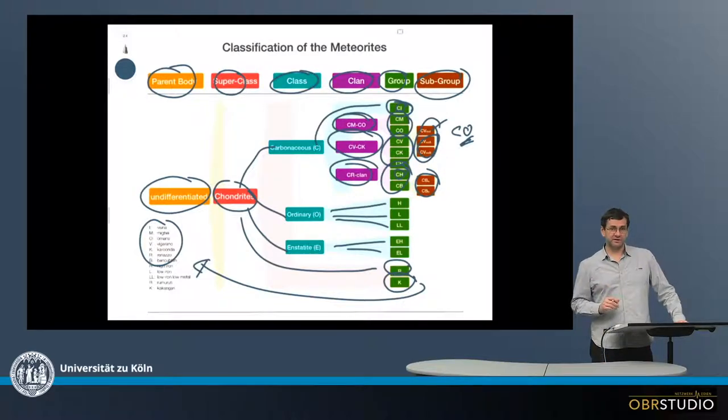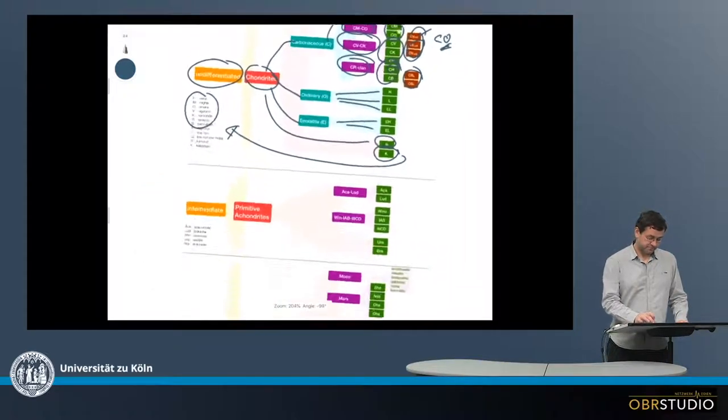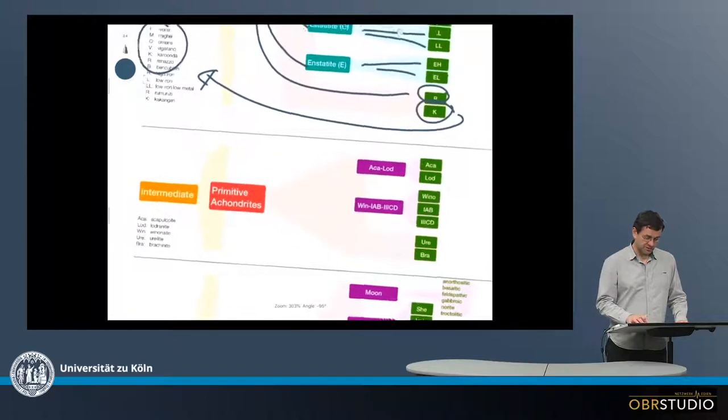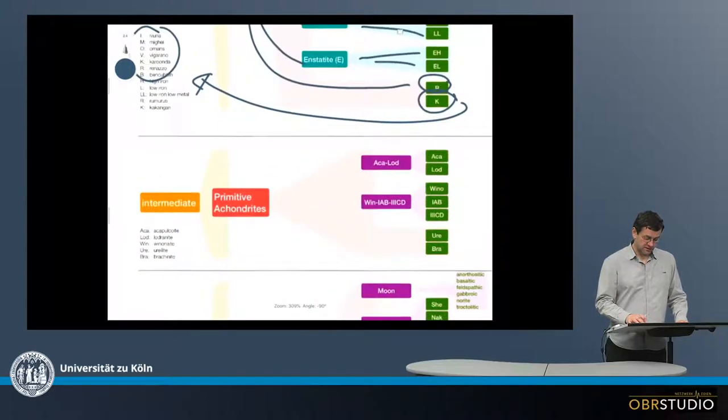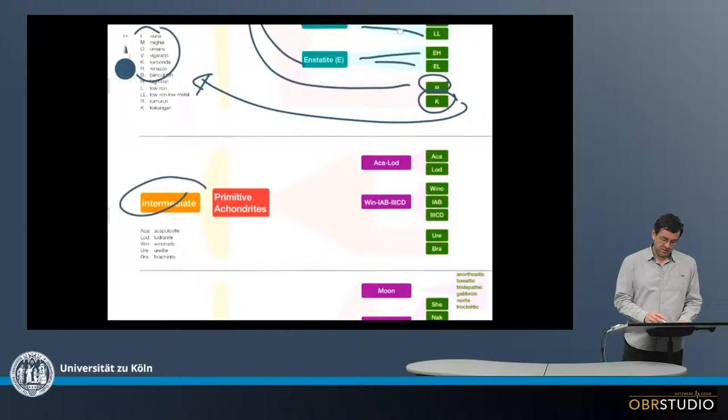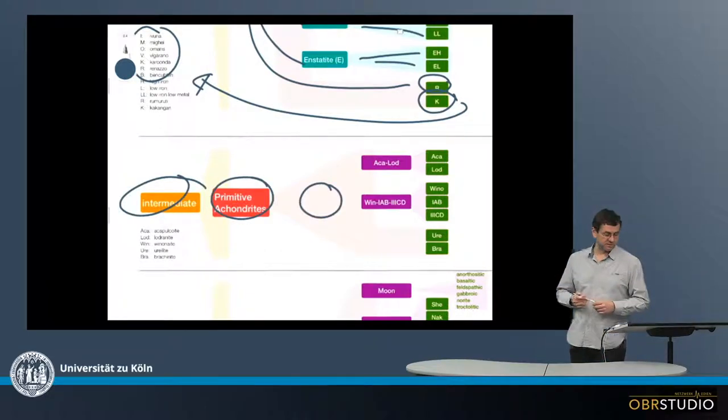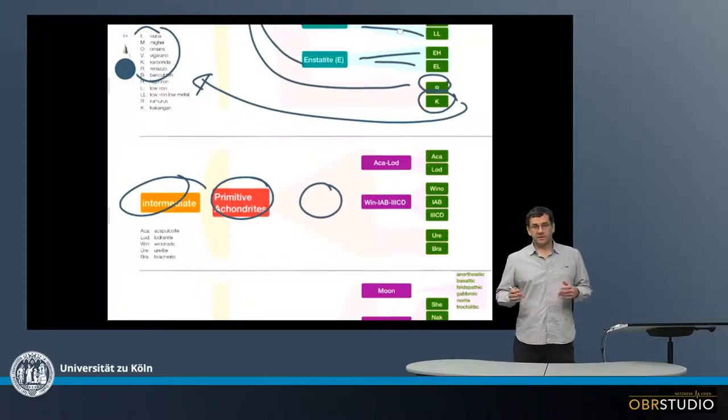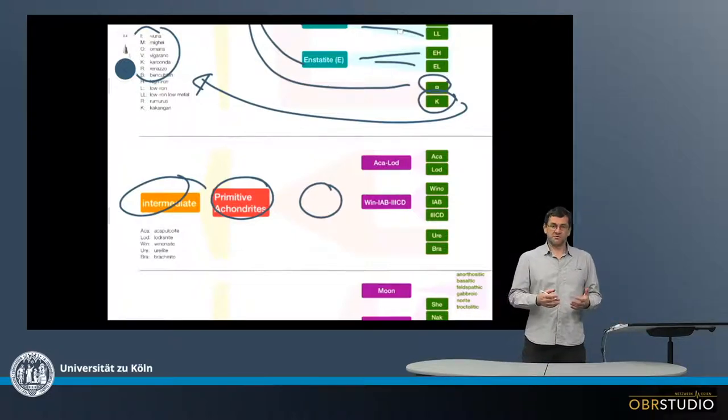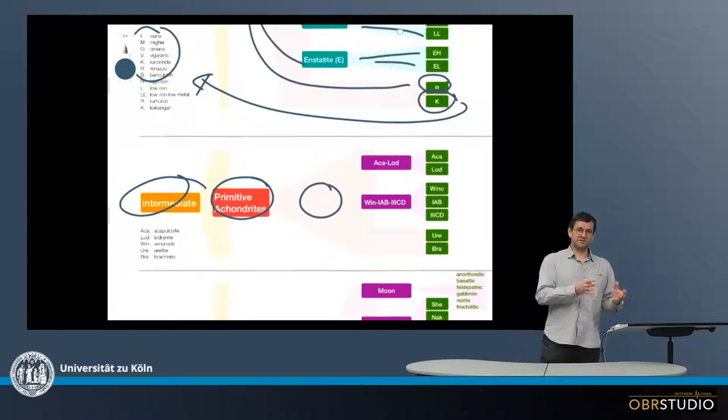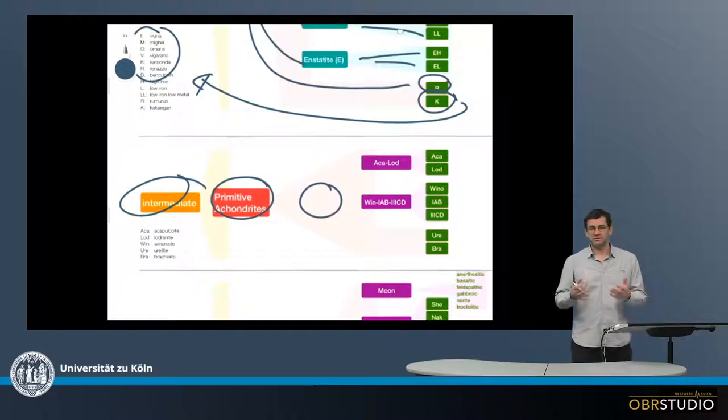Now this is all for the undifferentiated chondrites. Let's go on to the intermediate ones. These are also called primitive achondrites. They don't have class, they just have this kind of superclass. Achondrite means these are not chondrites. Primitive means they are sort of similar to chondrites, in that they are still quite primitive, like their bulk composition is chondrite-like.